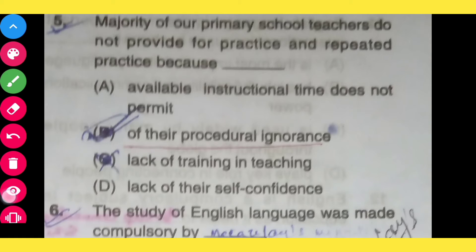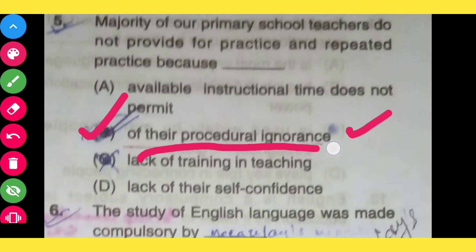Majority of our primary school teachers do not provide for practice and repeated practice because: option A, available instructional time does not permit; option B, of their procedural ignorance; option C, lack of training and teaching; option D, lack of their self-confidence. The correct answer is: of their procedural ignorance.